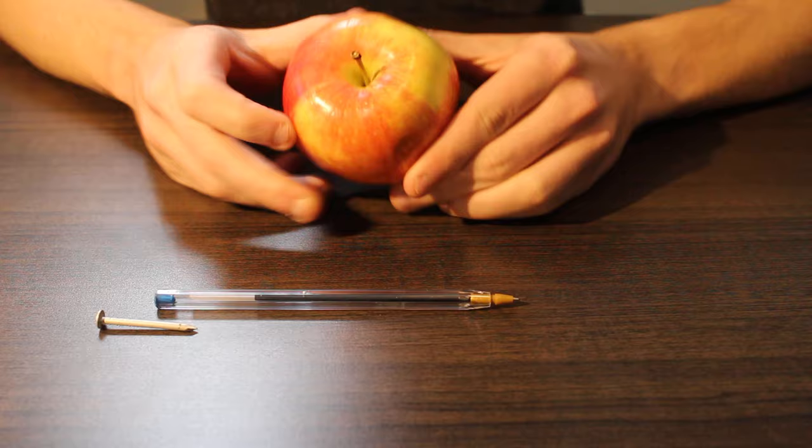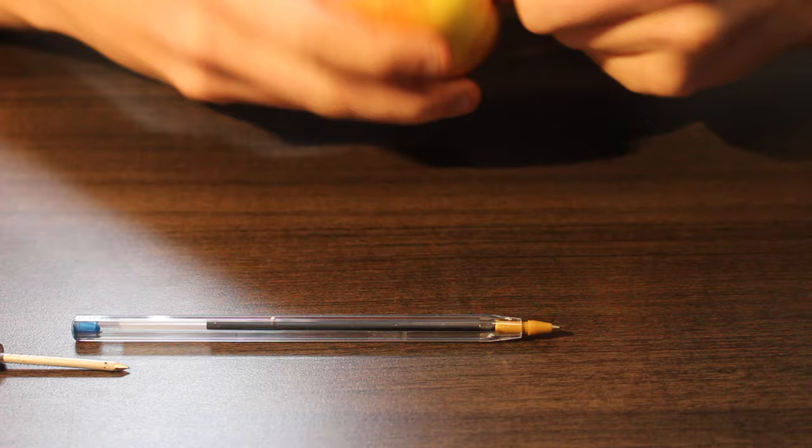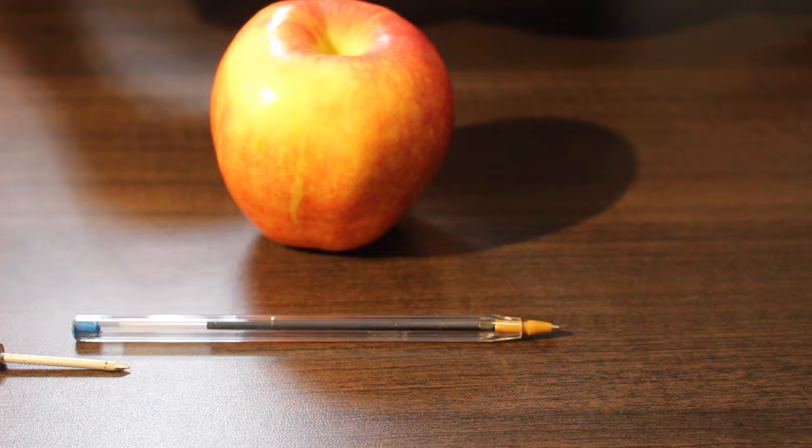To start off, you're just gonna go ahead and pull out the stem and that's gonna form your bowl right there. You can set the stem aside.